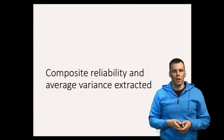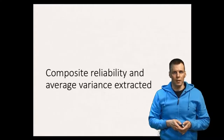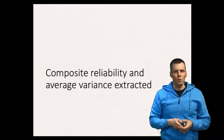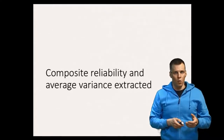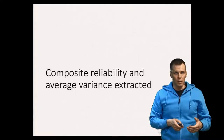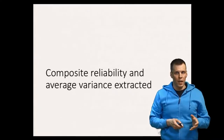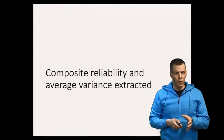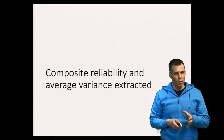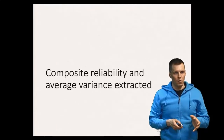Factor analysis results can be used for calculation of reliability indices similar to coefficient alpha. The most commonly used ones are the composite reliability index, also known as coefficient omega, and the average variance extracted, or AVE. The AVE is not that useful of an index and has some problems, but it's useful to understand what it quantifies because it's still fairly commonly used.